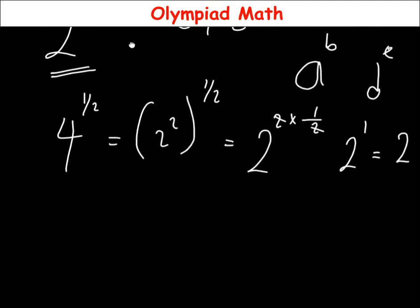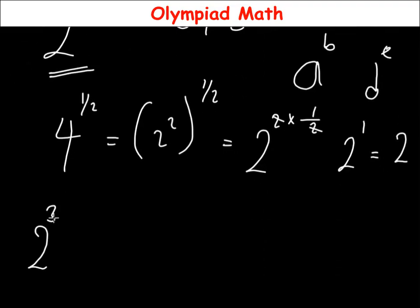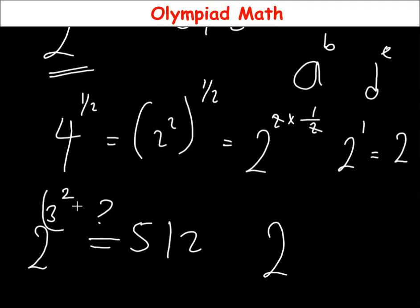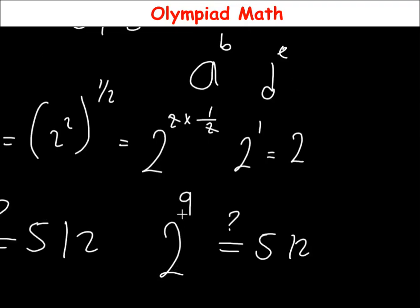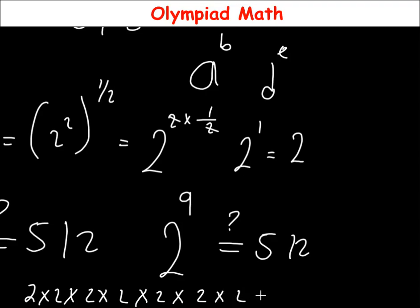Replacing 4^(1/2) with 2, we now have 2^(3^2). Then 3^2 = 9, so we have 2^9, which should equal 512. And indeed: 2 × 2 = 4, × 2 = 8, × 2 = 16, × 2 = 32, × 2 = 64, × 2 = 128, × 2 = 256, × 2 = 512 — that is 9 factors of 2, confirming 2^9 = 512.